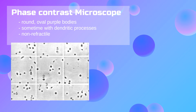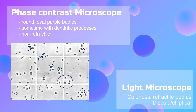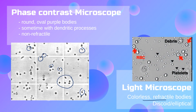Platelets may look different under phase contrast versus light microscopy. Under the phase contrast microscope, platelets are round, oval, and purple or dark bodies; sometimes dendritic processes may be observed, and platelets are considered non-refractile. Under the light microscope, platelets are described as colorless and refractile with either a discoid or elliptical shape. Misidentification is more common under the light microscope, where debris may also resemble platelets.